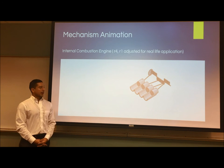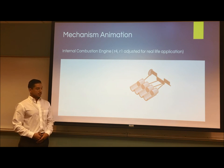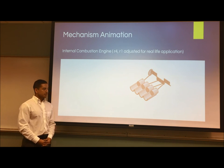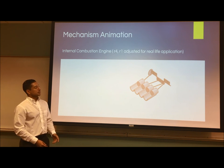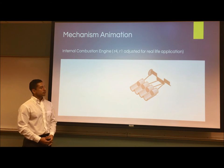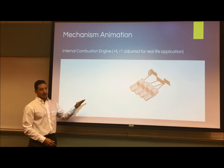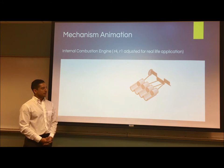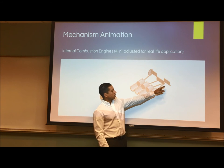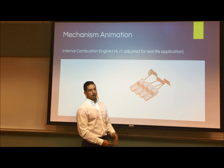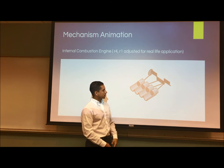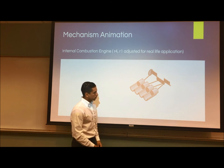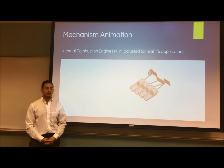We have a SolidWorks animation showing a real-world design for our project, using the same specifications issued to us with slight changes for the real-world application. The radius of the fourth link and first link were adjusted to align it as in an internal combustion engine. You can see the crankshaft — link two — as the driving force. It spins around, causing the slider, which represents the piston, to move in and out, producing the motion that occurs in an internal combustion engine.